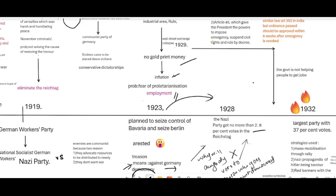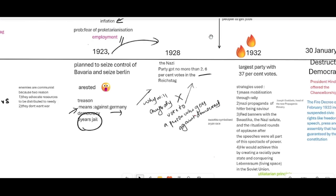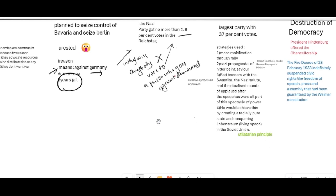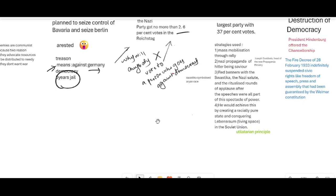Hitler's luck changed in 1929. Because of the Wall Street collapse in America, Germany was experiencing more inflationary problems and rising unemployment. German citizens had no jobs and the government was unable to help them given the economic conditions. The Nazi Party took this as their manifesto and, using a utilitarian principle, started assuring people that they would provide employment as well as living spaces.